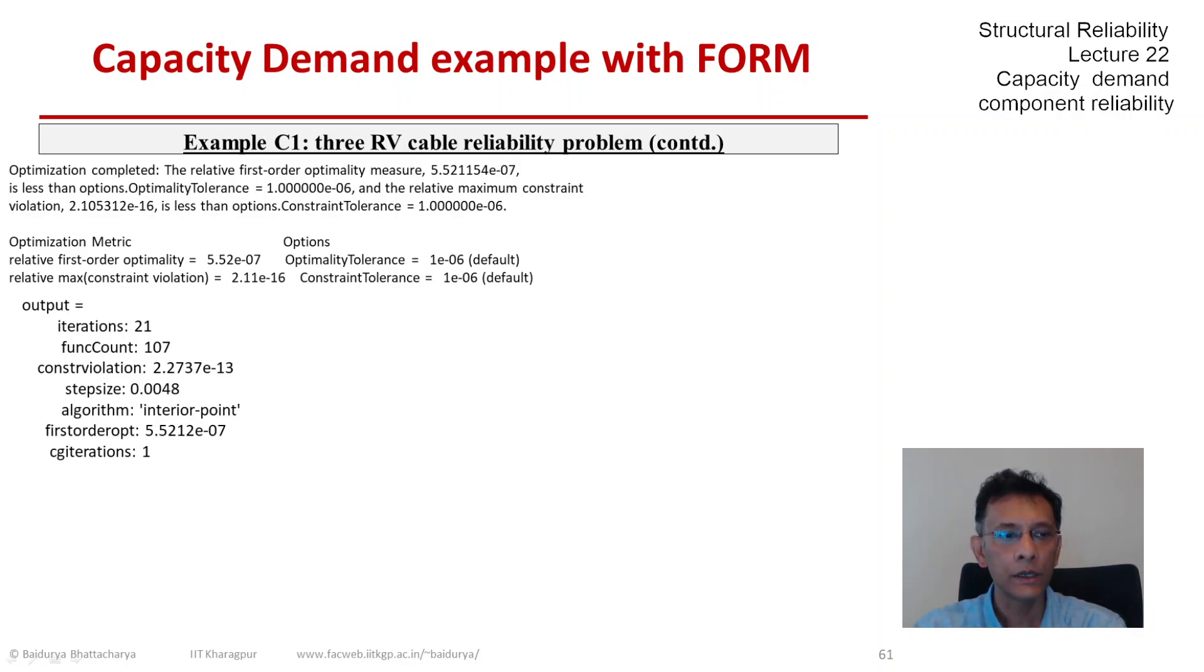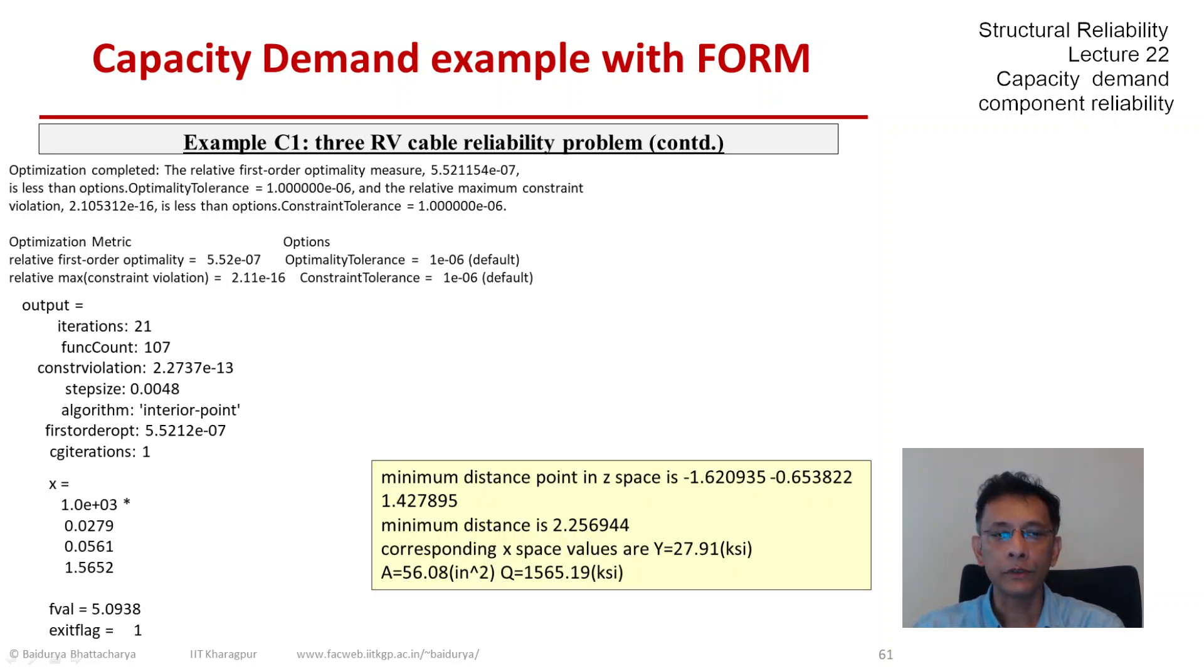Here are the tolerances mentioned, the default tolerances that the program used, and these are some further details. Here is the output, the optimal output in terms of the x's—the decision variables—the objective function at the optimal point. And then when we convert that into our required output, these are the numbers which I have already presented before I started showing this MATLAB code in detail.